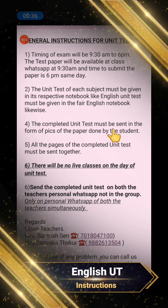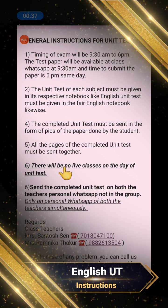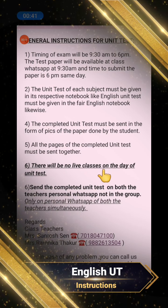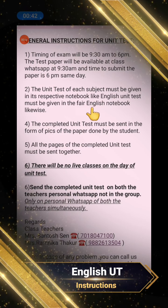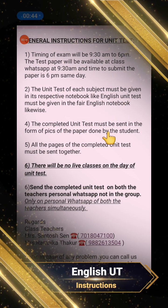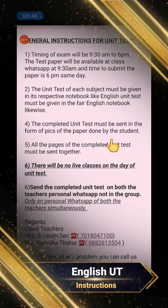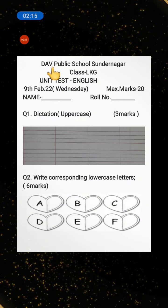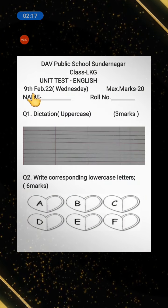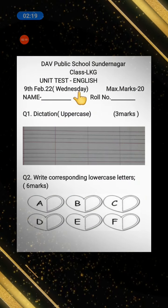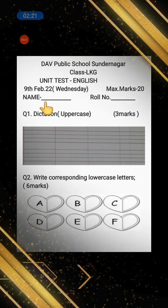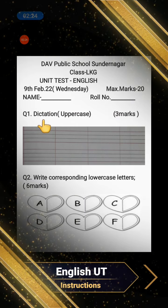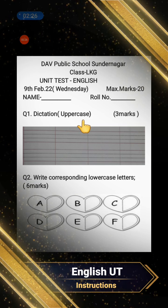Send it back to both teachers on their personal WhatsApp. On the unit test day there will be no live class. The English unit test has to be done in your English fair notebook. This is your English UT — the date is 9th February, Wednesday, total marks is 20. Write your name and roll number.